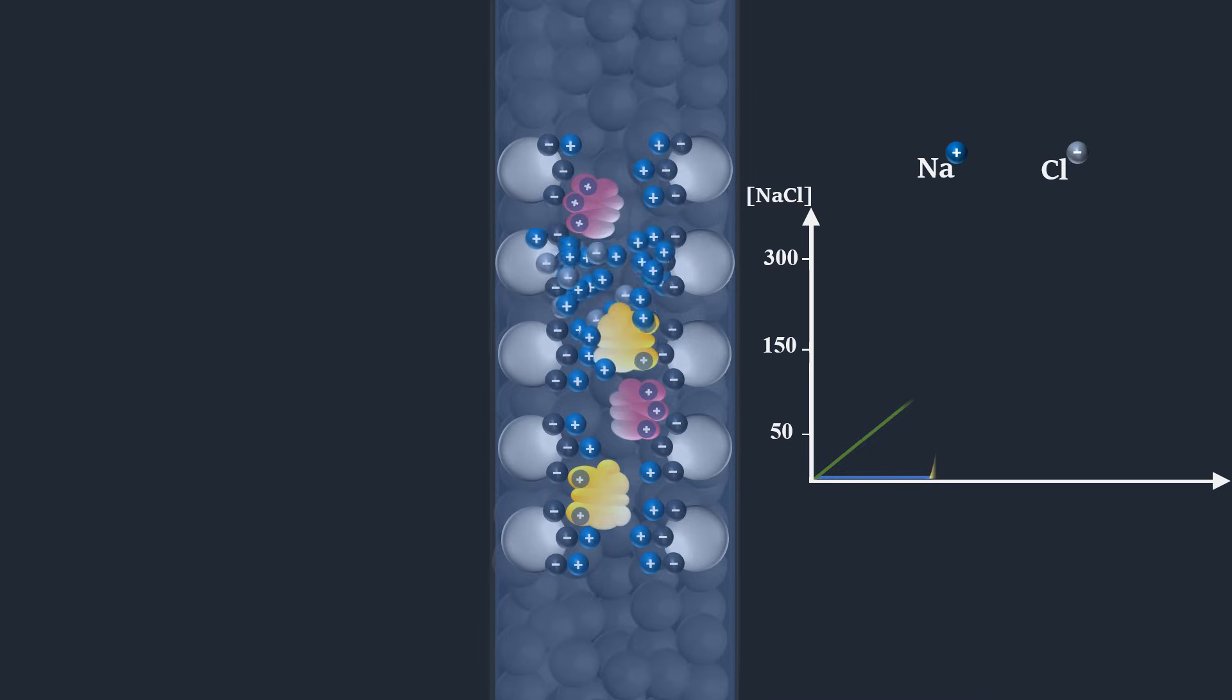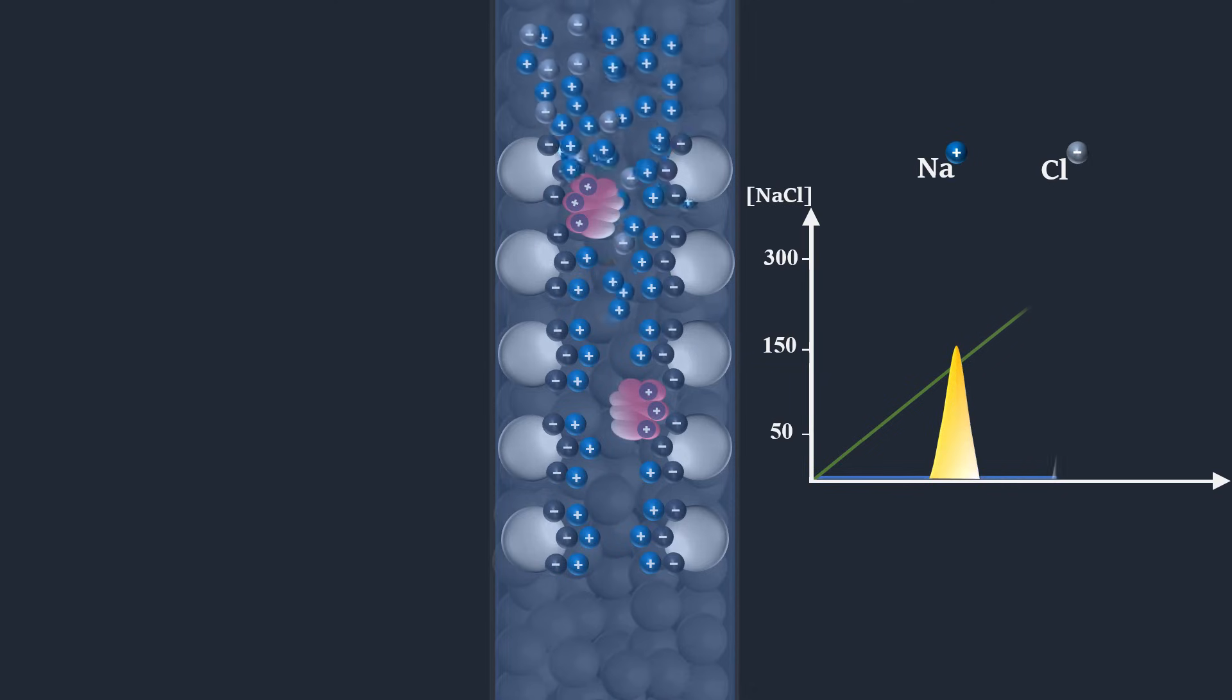The proteins with the lowest net charge at the selected pH will be the first ones eluted from the column as ionic strength increases. Similarly, the proteins with the highest charge will be most strongly retained and will be eluted last.